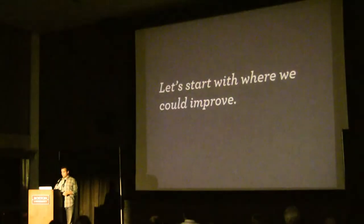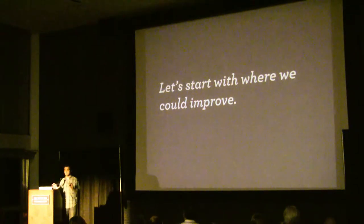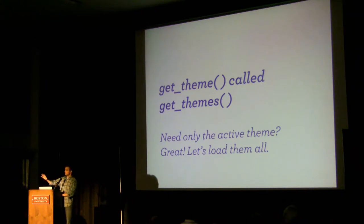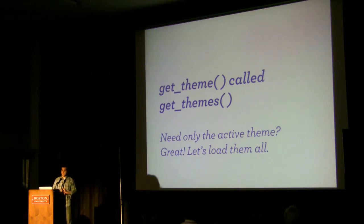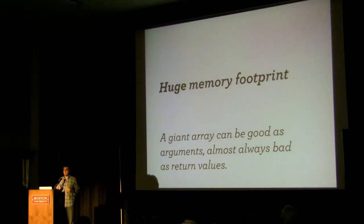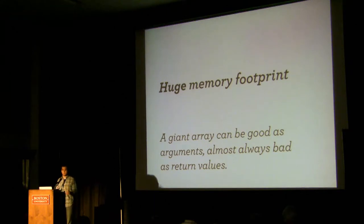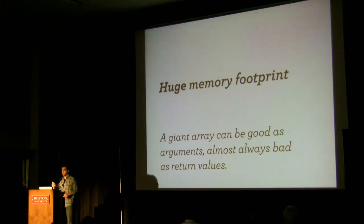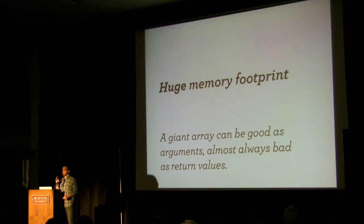We have this function called GetThemes, and GetThemes would loop through every single theme and compile a whole lot of statistics for each theme. So when you said 'I want information about the current theme,' it would say, 'Sure, one second while I calculate the other 50 themes that you're not going to need.' This obviously doesn't work very well. This results in a very bad memory footprint — your code just isn't efficient. WordPress uses giant arrays as return values, and that can be really, really tricky.